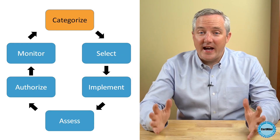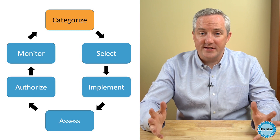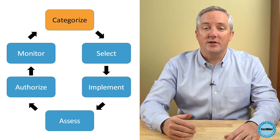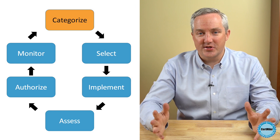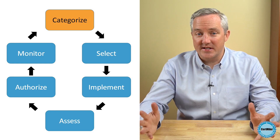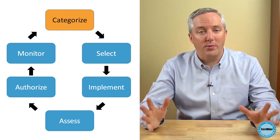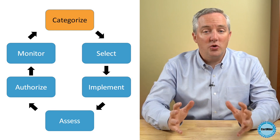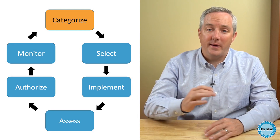Back to the risk management process. After gathering information about the technology architecture and the organization itself, the process enters step one, where we categorize the information system being assessed, as well as the information that's stored, processed, and transmitted by that system. We normally do this by performing an impact assessment.